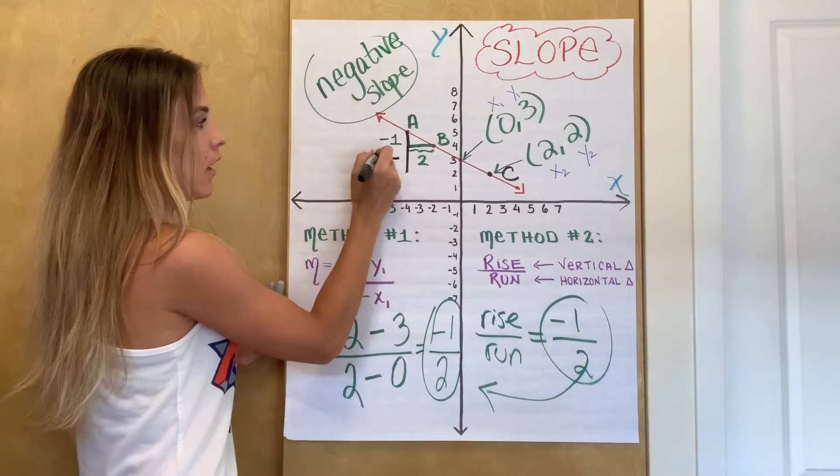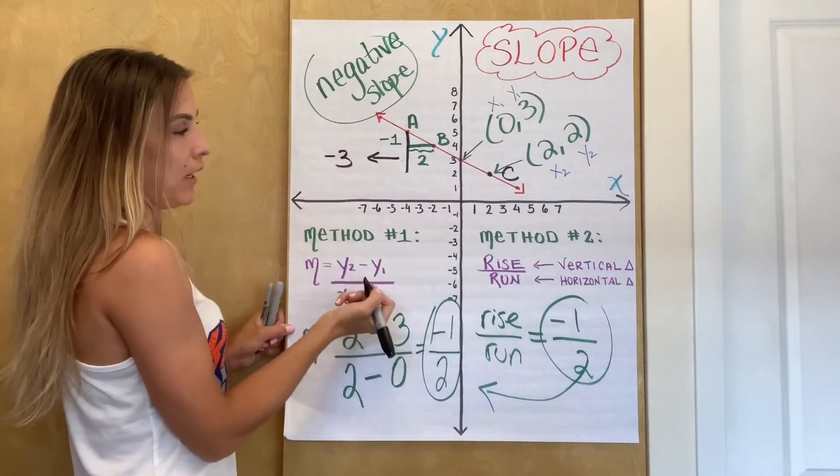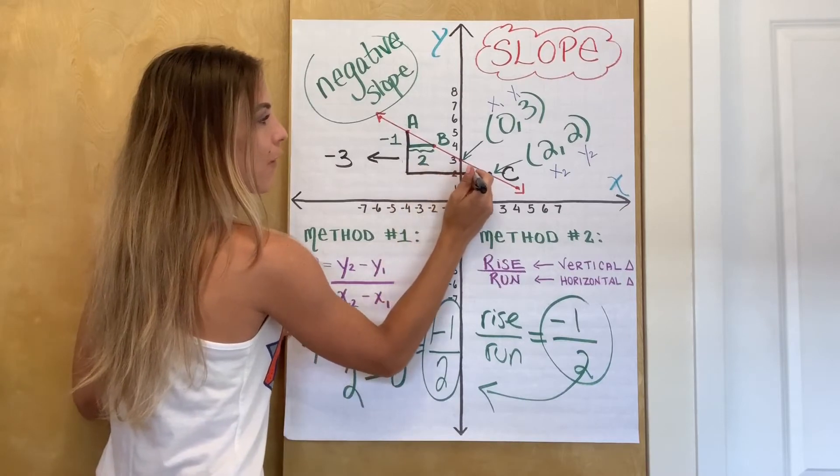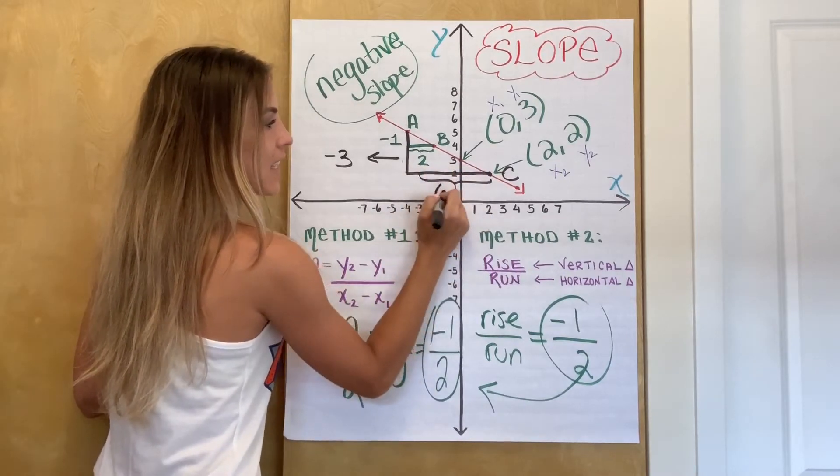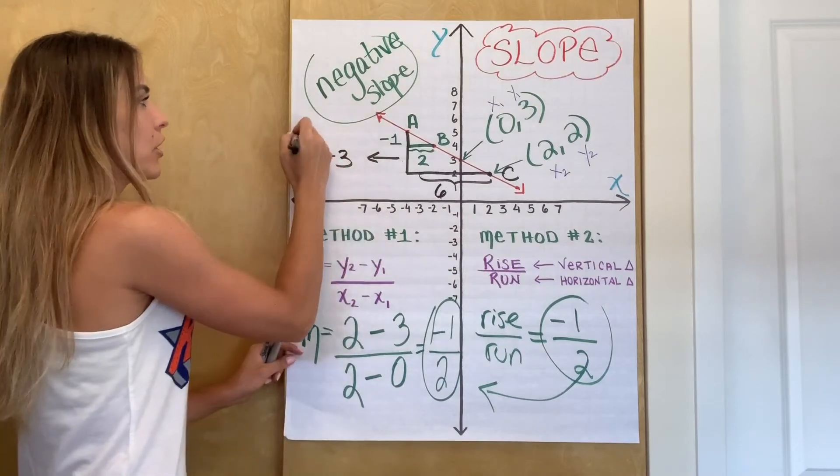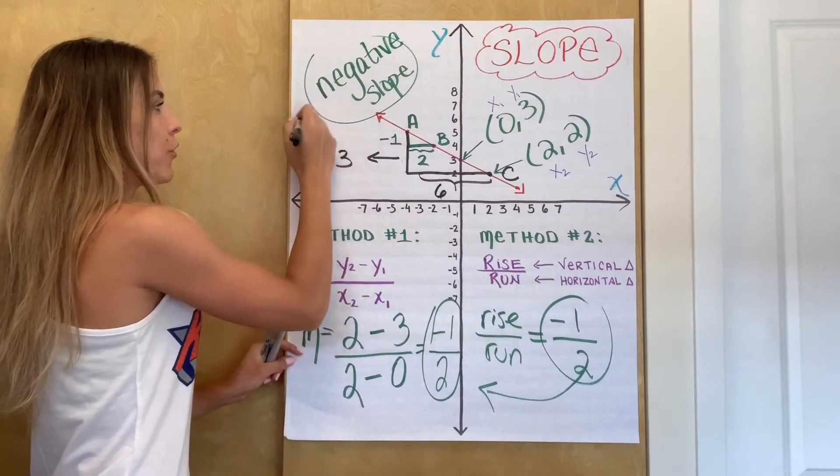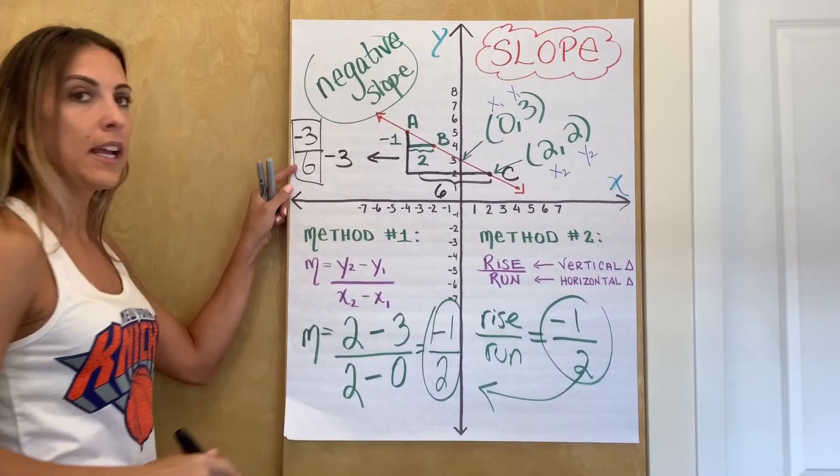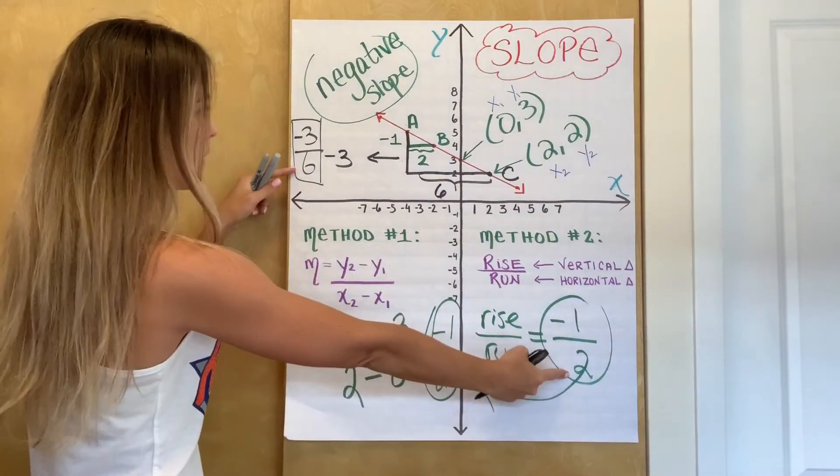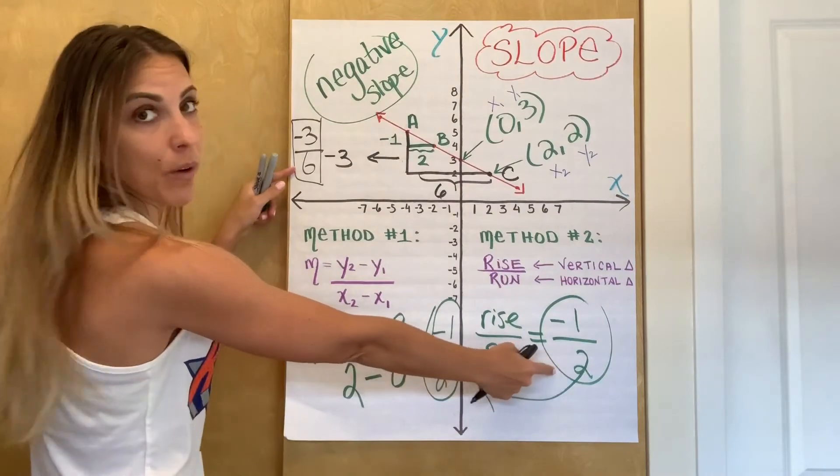Three spaces down. So now my vertical change is down three, negative three. And then over one, two, three, four, five, six, six is my run. So now if I tried to write the rise over run, it would look like negative three over six, which at first glance you might think is different from what we first got. But if you take a second to think about it, you'll realize these are actually equivalent fractions, right?